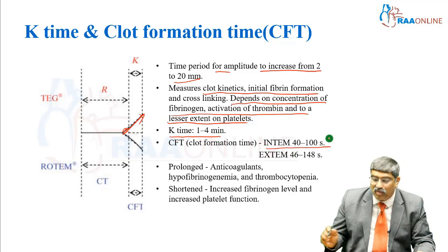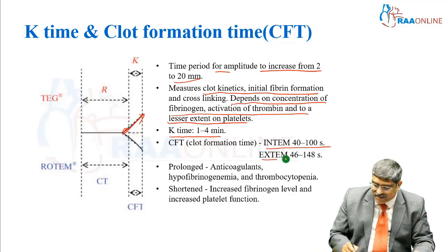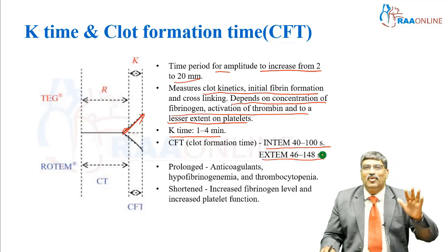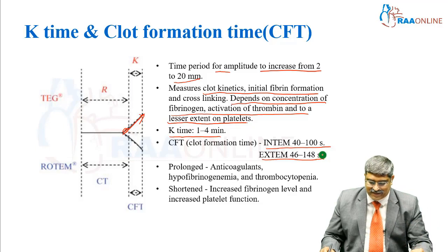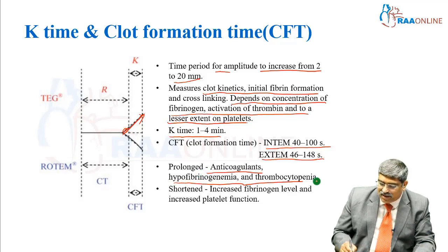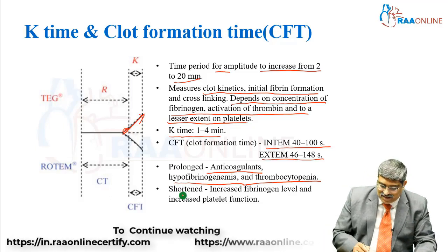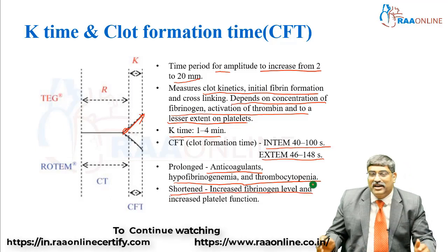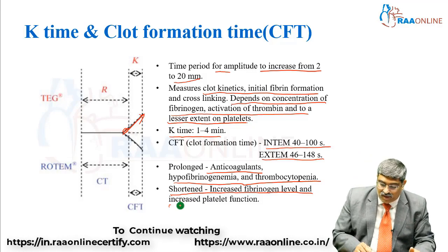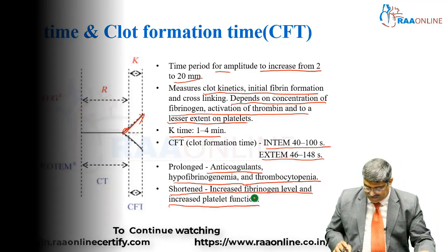The normal kinetics time is 1 to 4 minutes. In ROTEM, the clot formation time in INTEM is around 40 to 100 seconds, and in EXTEM it is 46 to 148 seconds. It is prolonged with anti-coagulation, decreased fibrinogen, and decreased platelets. It is shortened in cases of increased fibrinogen level or when platelets are hyperactive.